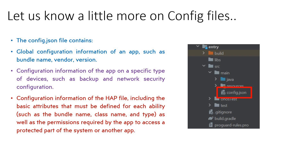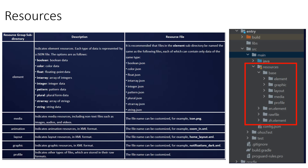The config.json also contains configuration information of the HAP file, including the basic attributes that must be defined for each ability, as well as the permissions required by the app to access protected parts of the system or another app. Overall, it has the complete configuration details — which can cover backup, network security, and fundamental information like bundle name, vendor, and version details.